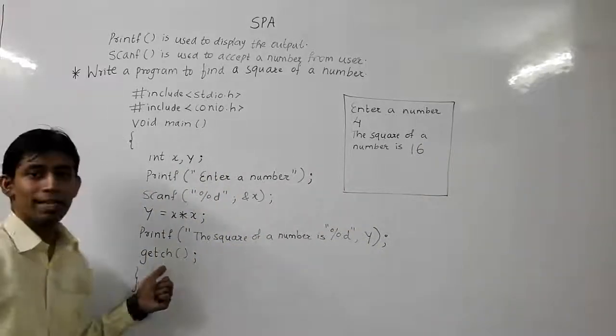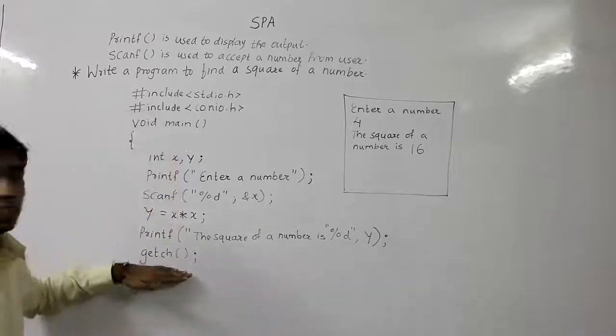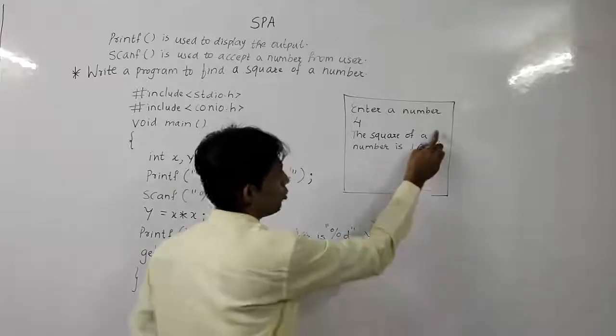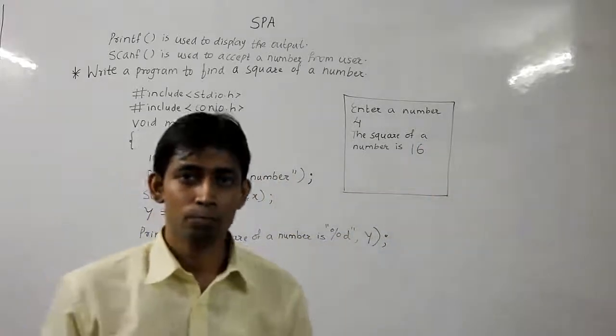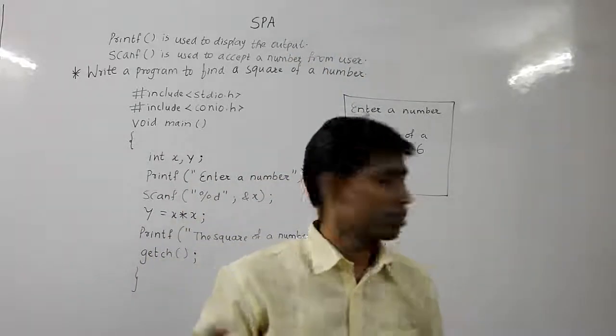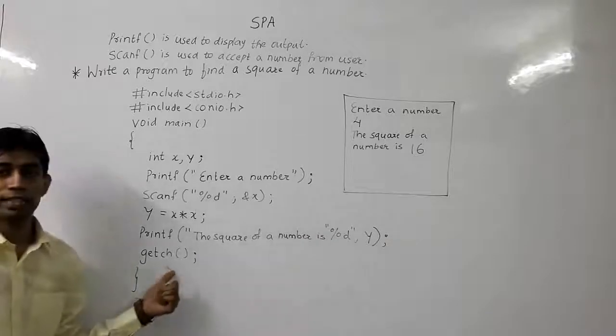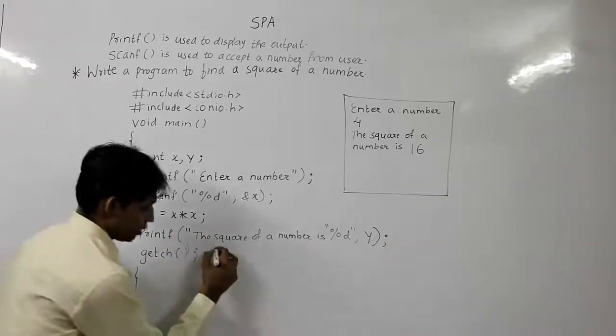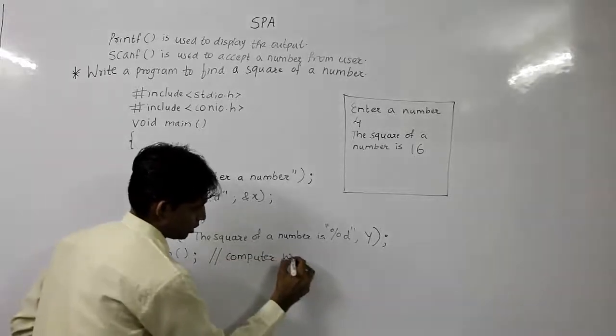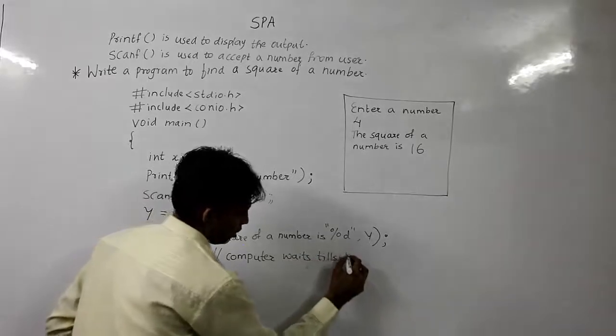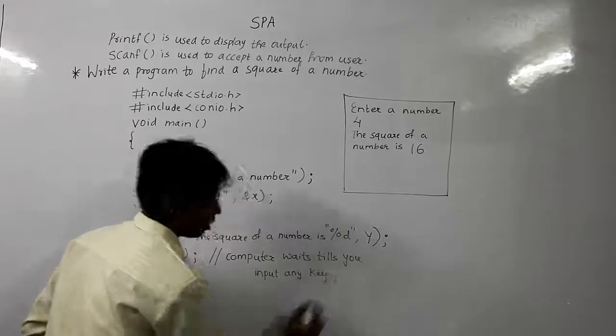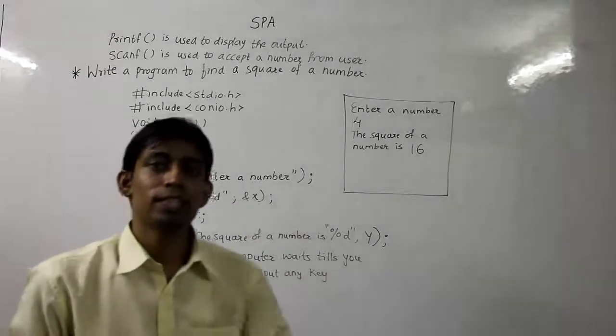Now, I have put up a getch. What will happen if you don't put up getch? This screen will be so fast that you are unable to view this 16 also. And, it vanishes. So, to make sure that screen waits for your input and then it vanishes, you are using this getch. So, that computer waits till you input any key.